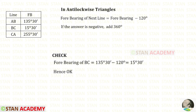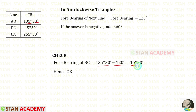We have calculated all of the forebearings. Now let us apply a check. We already know the forebearing of BC, but one more time let us verify it using the forebearing of AB: 135 degrees 30 minutes minus 120 degrees. We will get 15 degrees 30 minutes. Hence both of the values are the same — check passed.